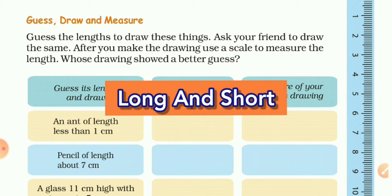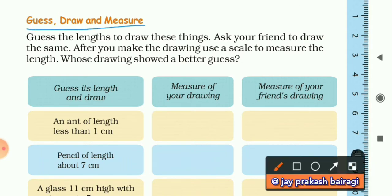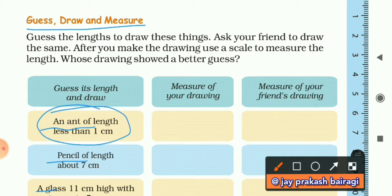The heading for our activity is 'Guess, Draw and Measure.' In this activity, we have to guess the length of some things — a pencil, a glass, and many other objects. By guessing, we have to draw their lengths. For example, here we have an ant of length less than one centimeter.